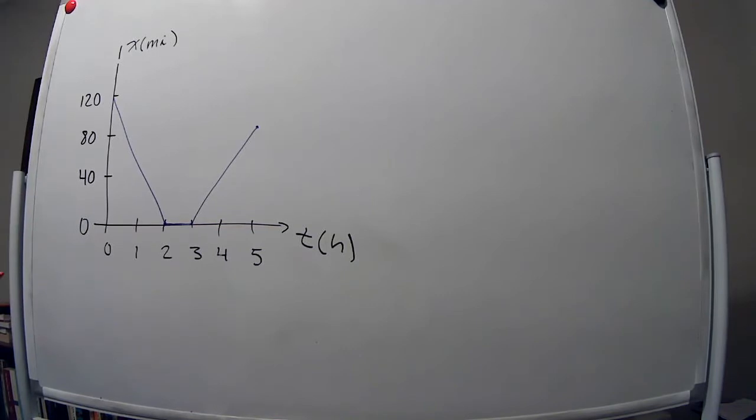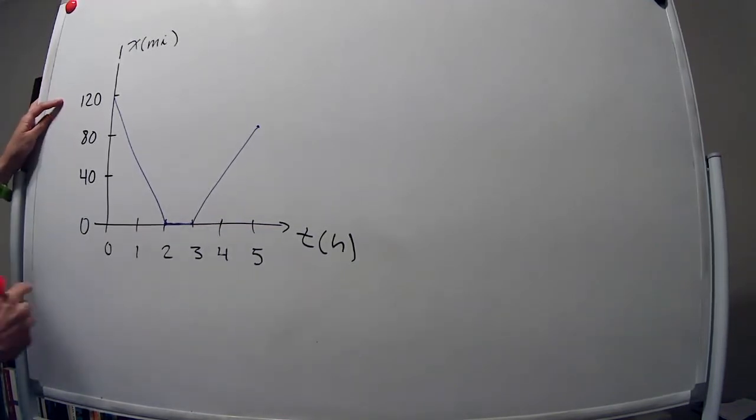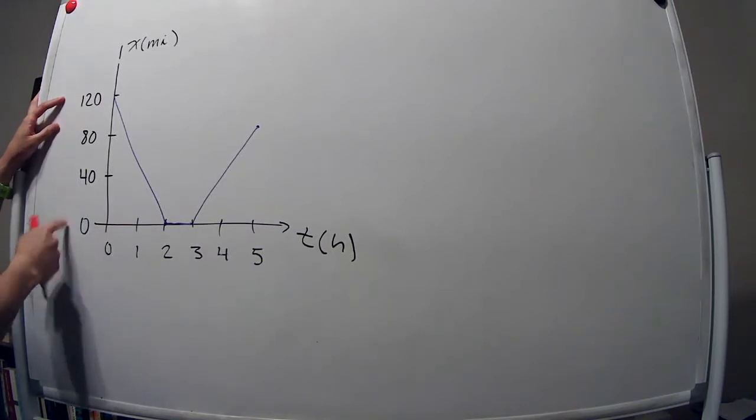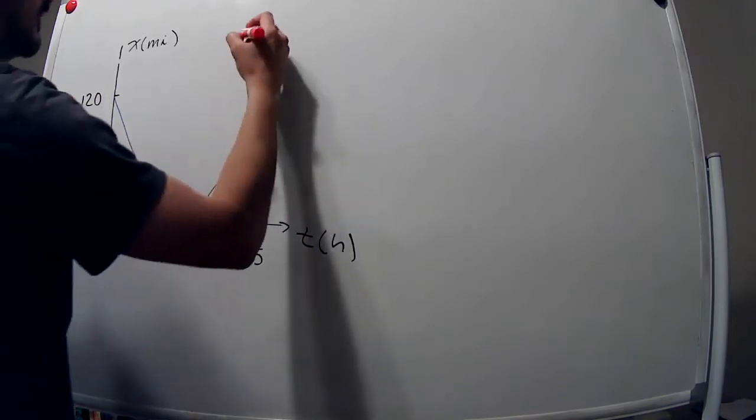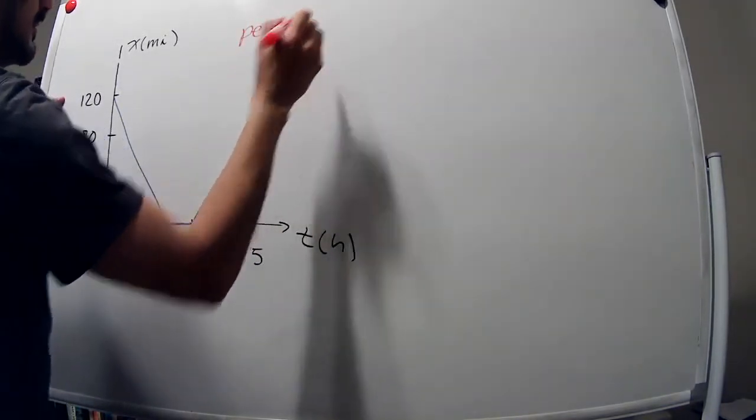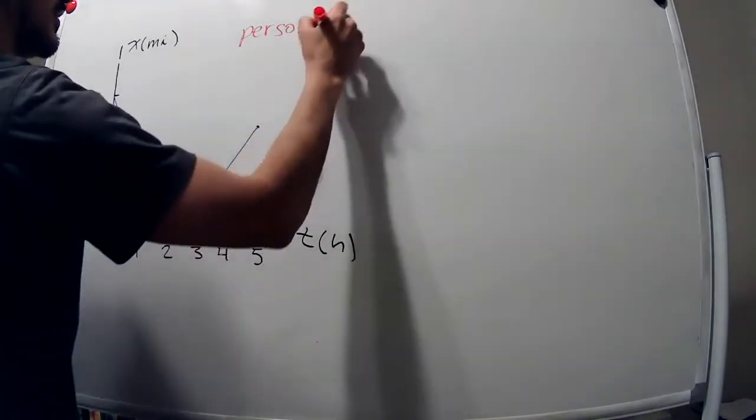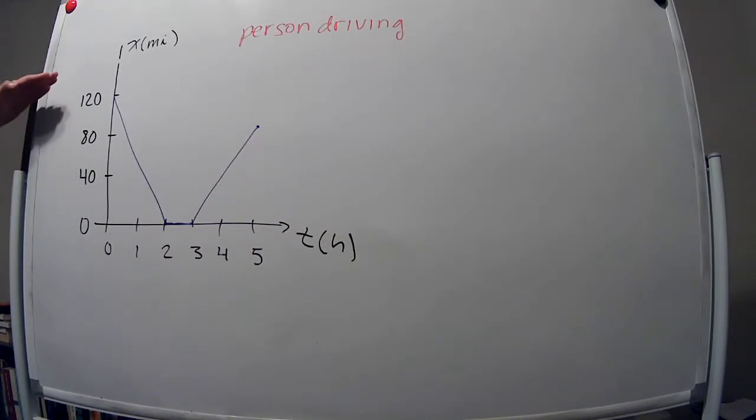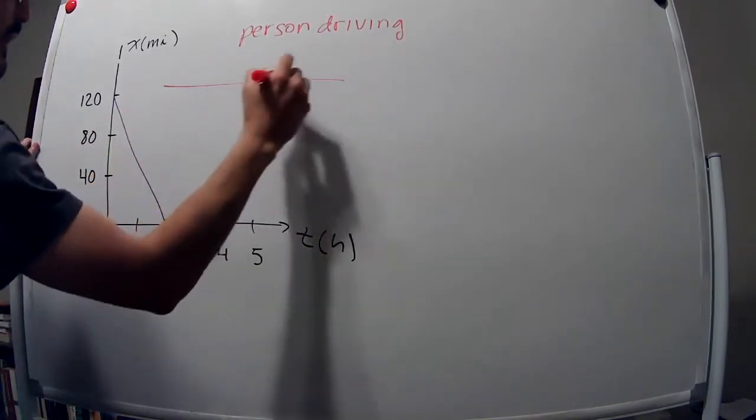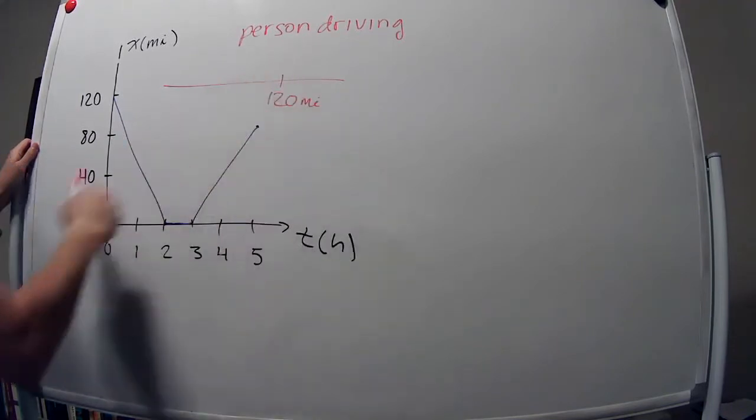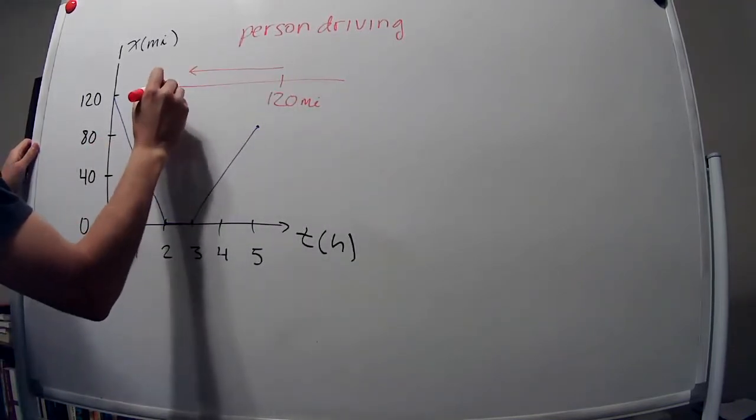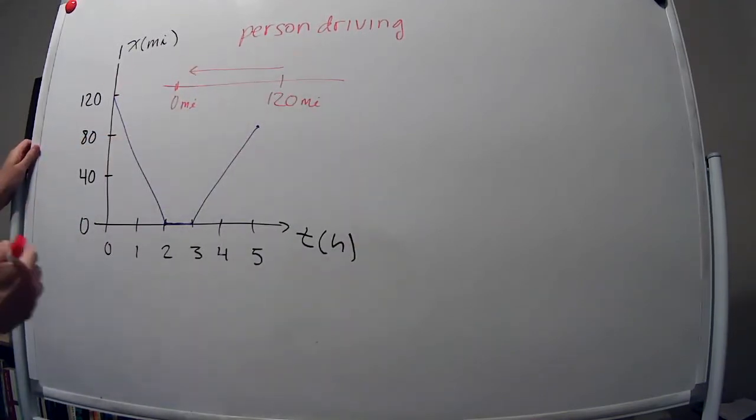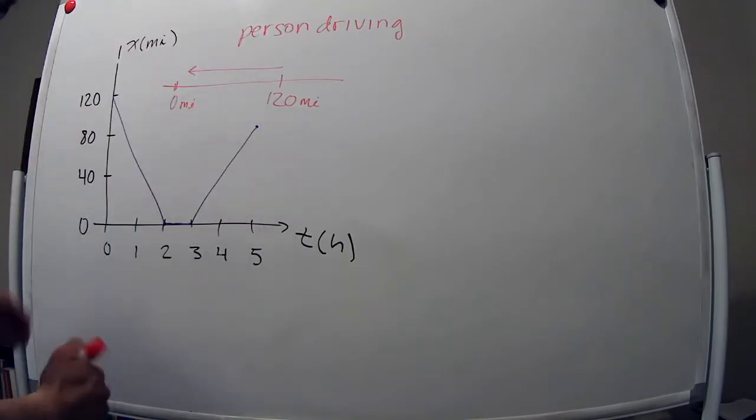So first, let's write what will be happening here. So I don't know, let's say that a person is driving. And it's initially at 120 miles and it drives to zero miles, right? So it's going to drive to the left or to the negative direction.